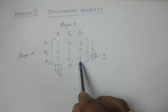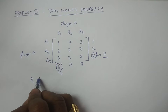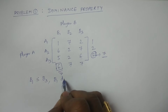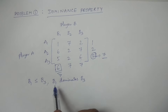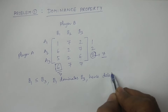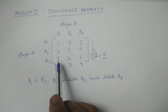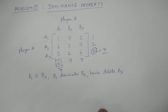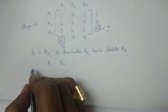Because B1 dominates B3, player B would prefer the strategy with lower payoffs to the opponent. All elements in B1 are less than or equal to those in B3, so strategy B3 can be deleted. Player B's dominated strategy B3 is removed.